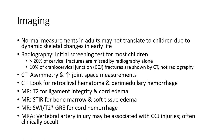On CT, look for asymmetry and increased joint space measurement, retroclivus hematoma, and perimedullary hemorrhage. MRI T2 is used for ligament integrity and cord edema. STIR sequences assess bone marrow and soft tissue edema. SWI or T2-star gradient echo is used for cord hemorrhage. MRA for vertebral arterial injury may be associated with CCJ injury, which is often clinically occult.